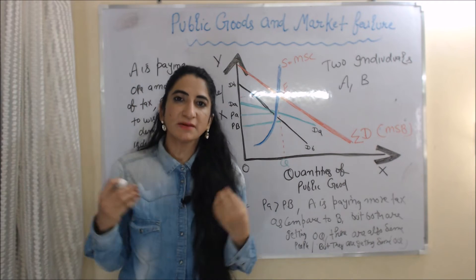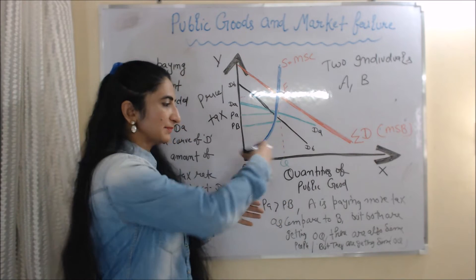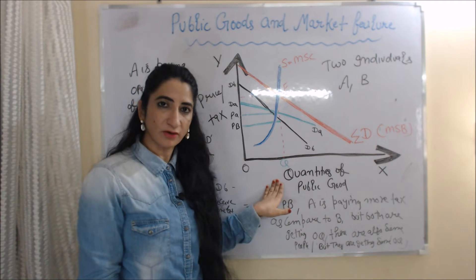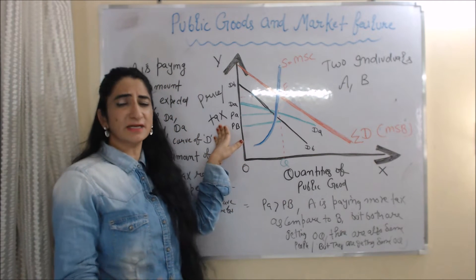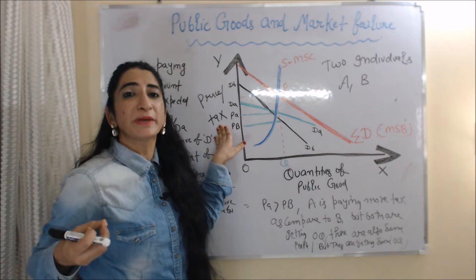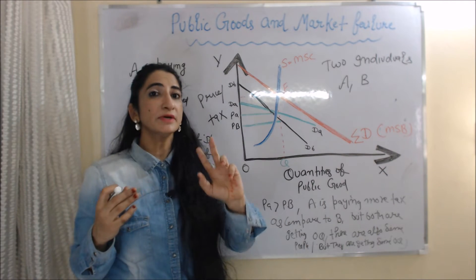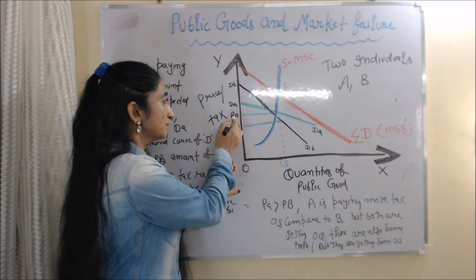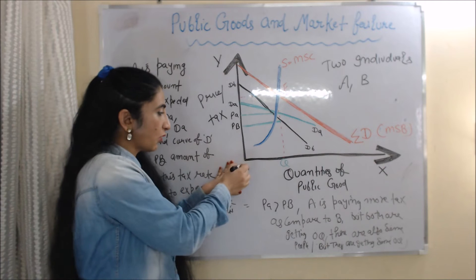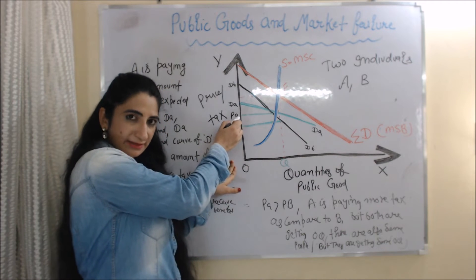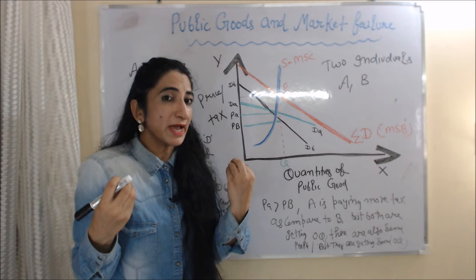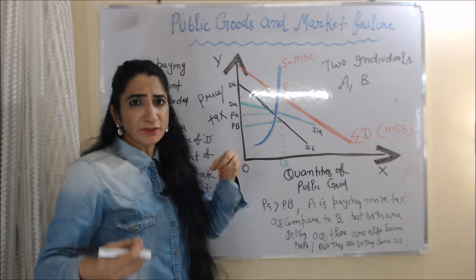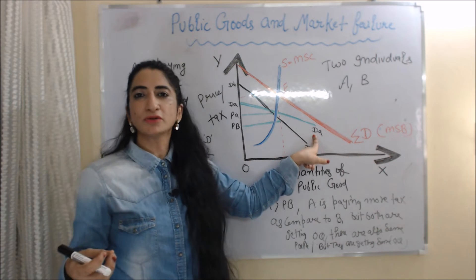Now we look at public goods and market failure with the help of this diagram. On the x-axis we have quantity of public goods, and on the y-axis we have price — or the tax paid by individuals. Here we assume we have two individuals, A and B. Individual A is paying OPA amount of tax, and at this amount of tax he wishes to demand DA, or receive DA amount of benefit.